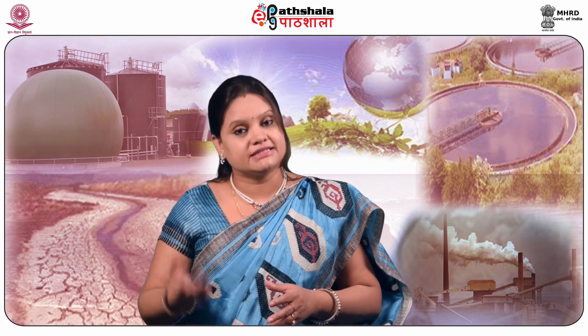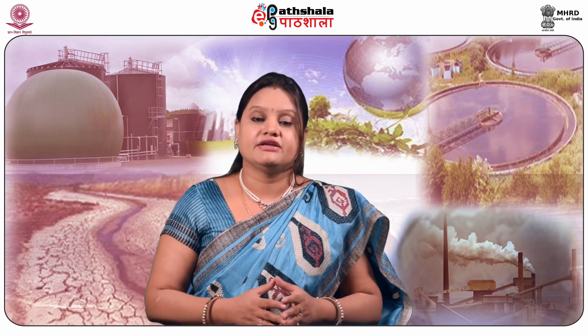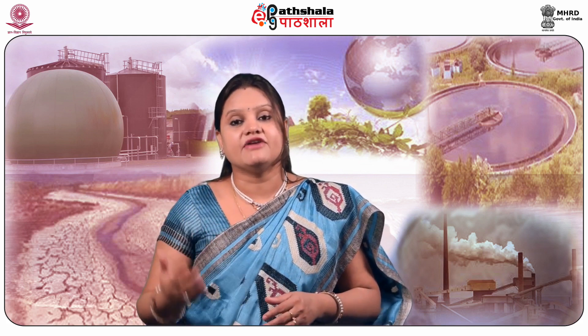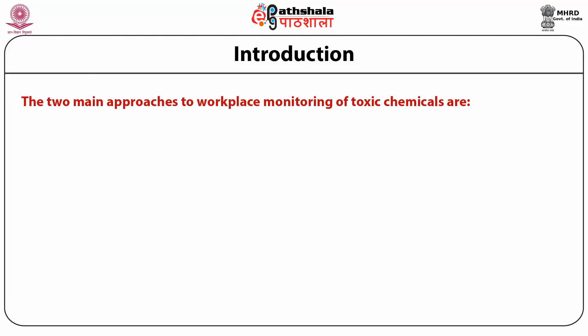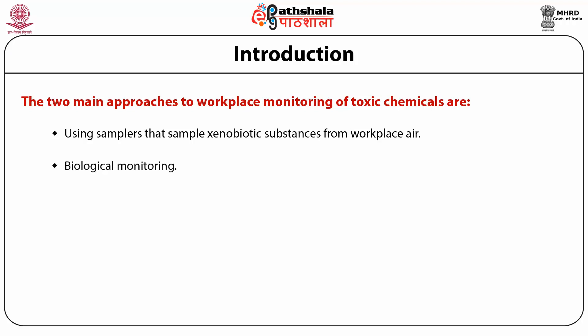The measurement of xenobiotic substances and their metabolites in blood, urine, breath and other samples of biological origin to determine exposure to toxic substances is called biological monitoring. The two main approaches to workplace monitoring of toxic chemicals are using samplers that sample xenobiotic substances from workplace air, and biological monitoring. Biological monitoring is a much better indicator of exposure because the phase 2 reaction product is measured — for example, sulfuric acid determined as evidence of exposure to toluene.